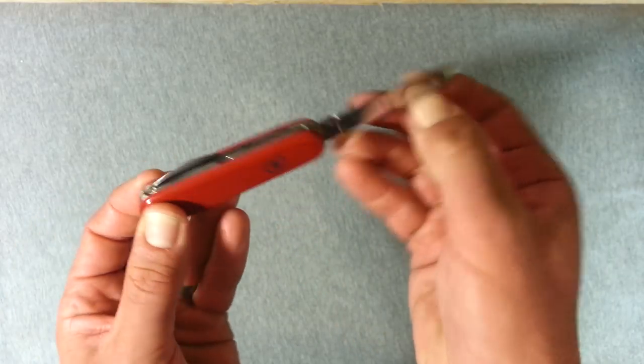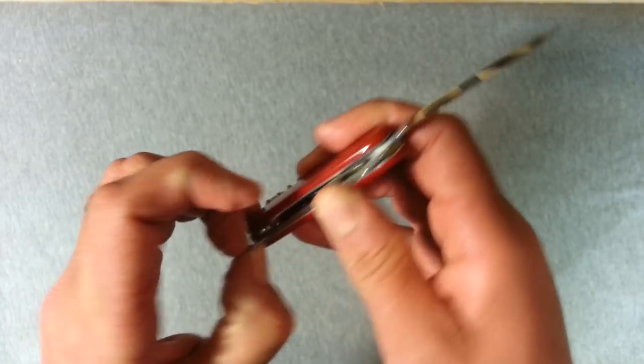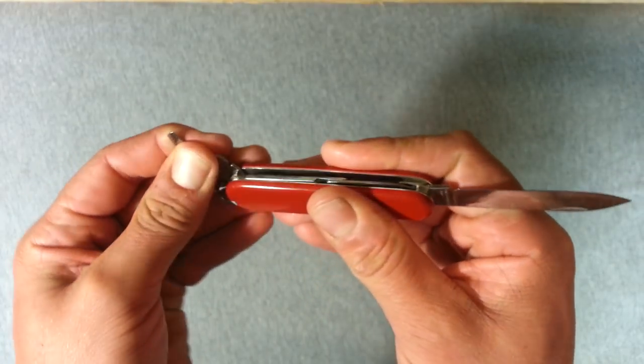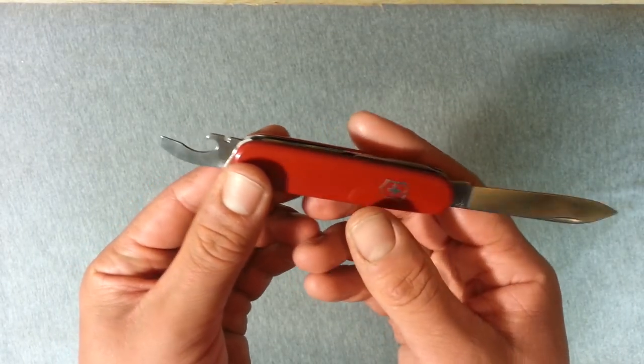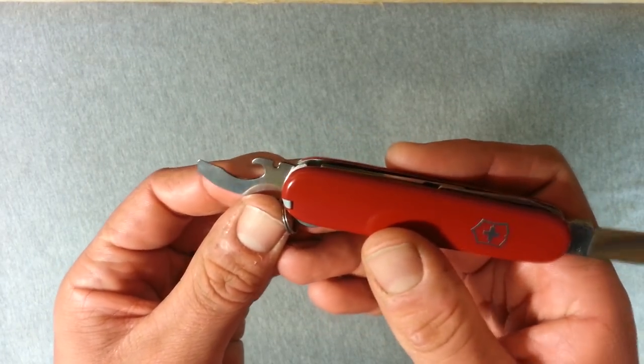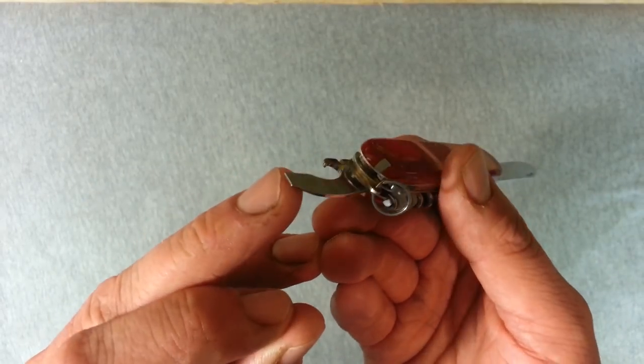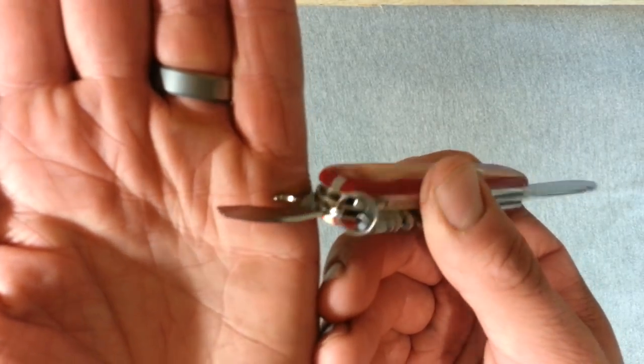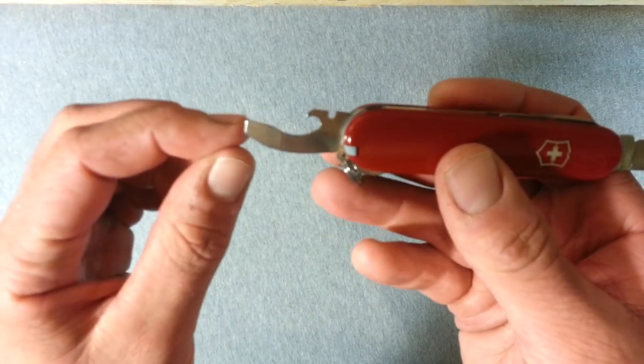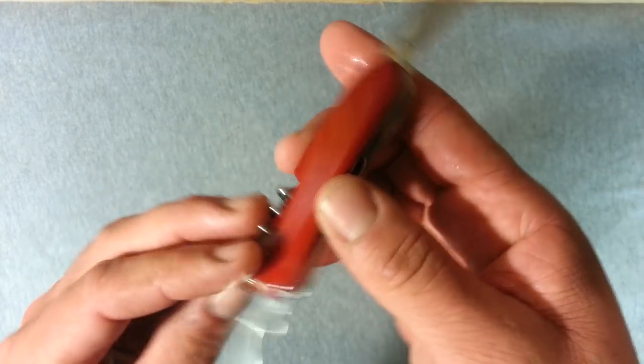We have the standard main blade. And back here we have the combo tool on this one, which kind of does away with one of the layers because you're combining your can opener and cap lifter into one. Also the wire stripper and the small flathead. It's actually so thin it's pretty much almost like a small prying tool, but a small flathead screwdriver on the end there.